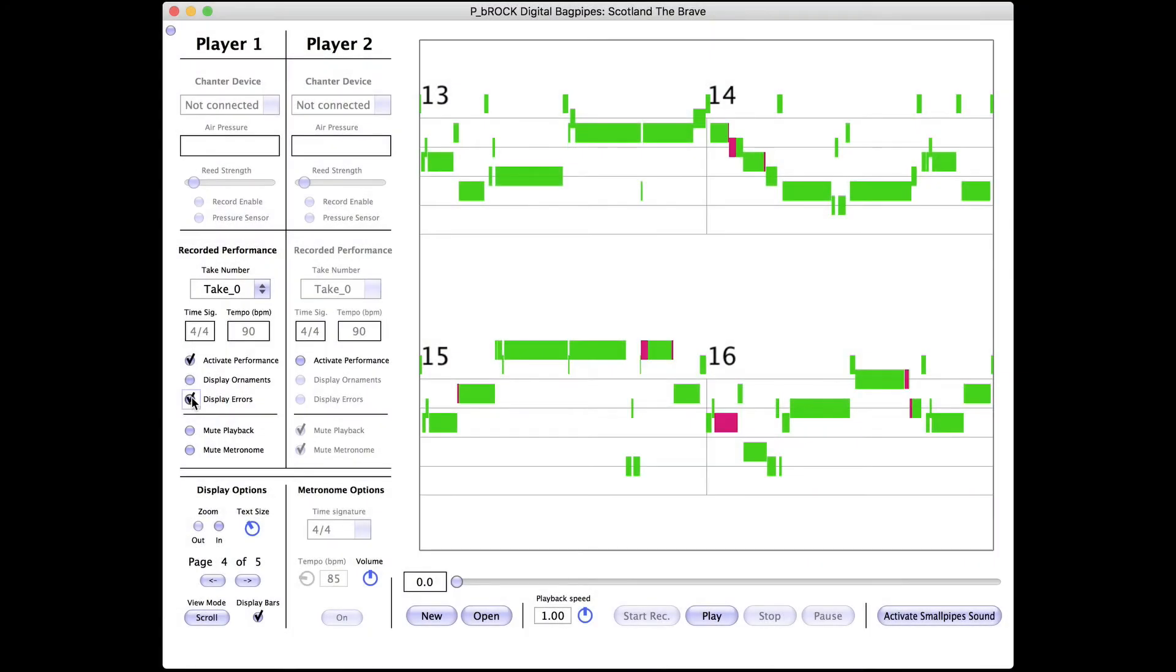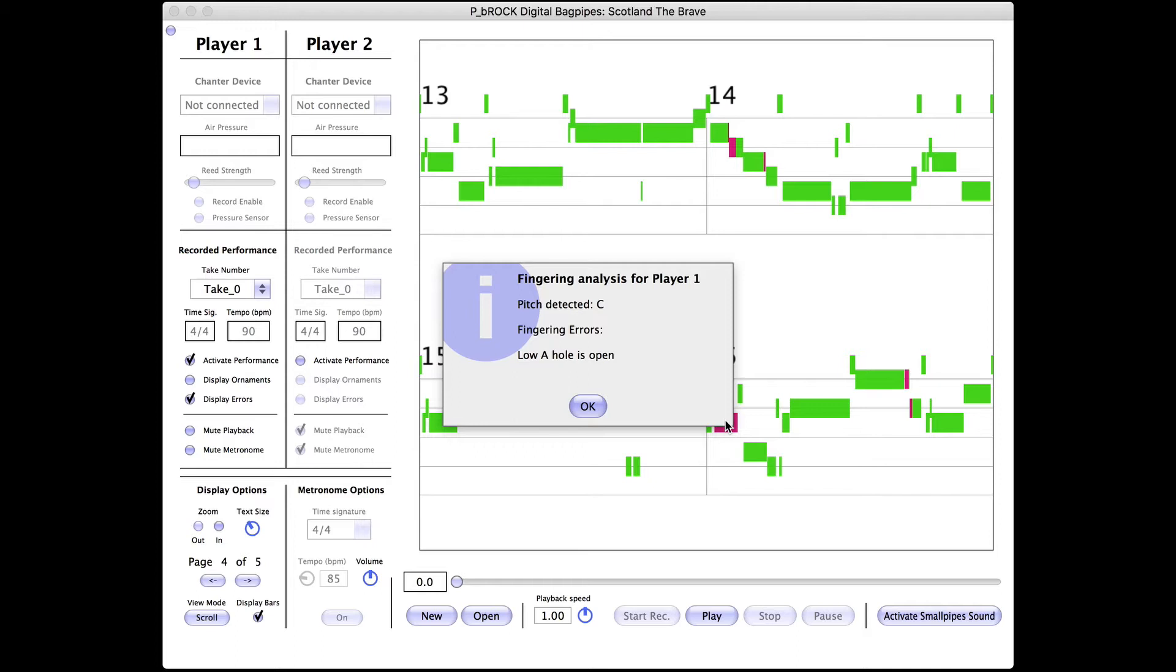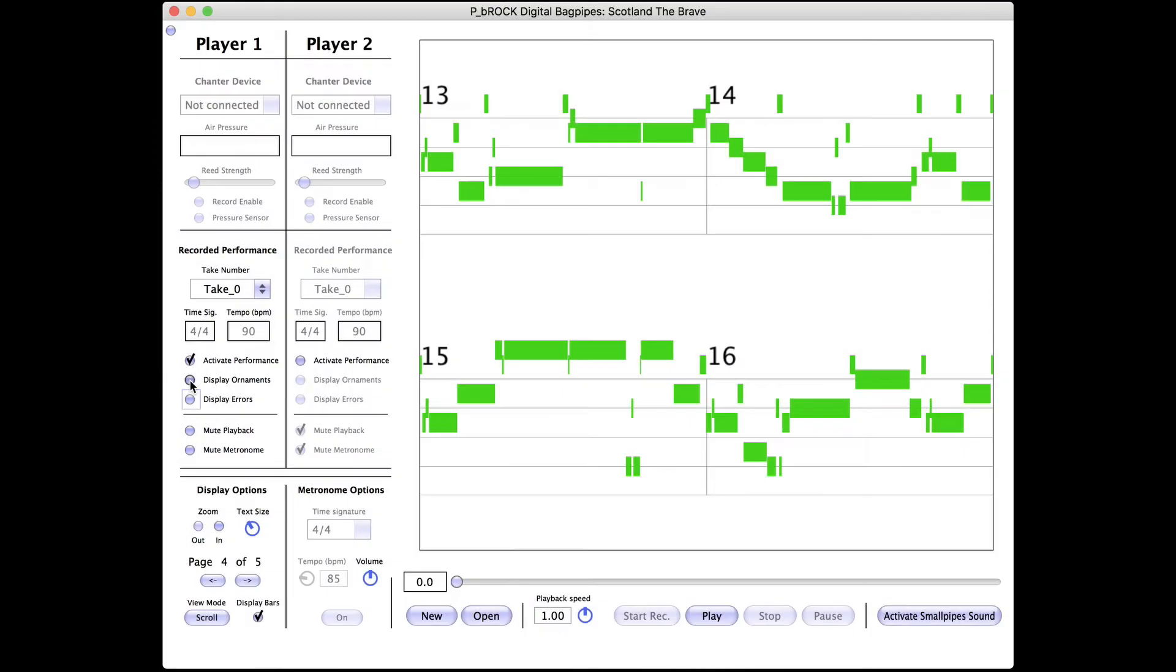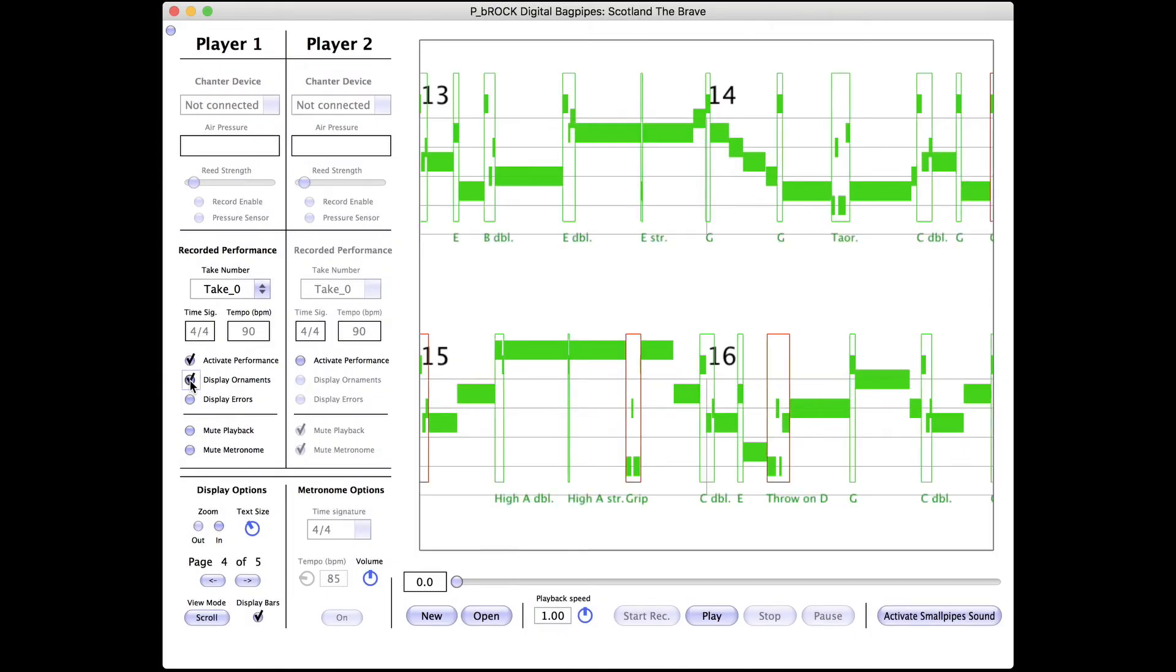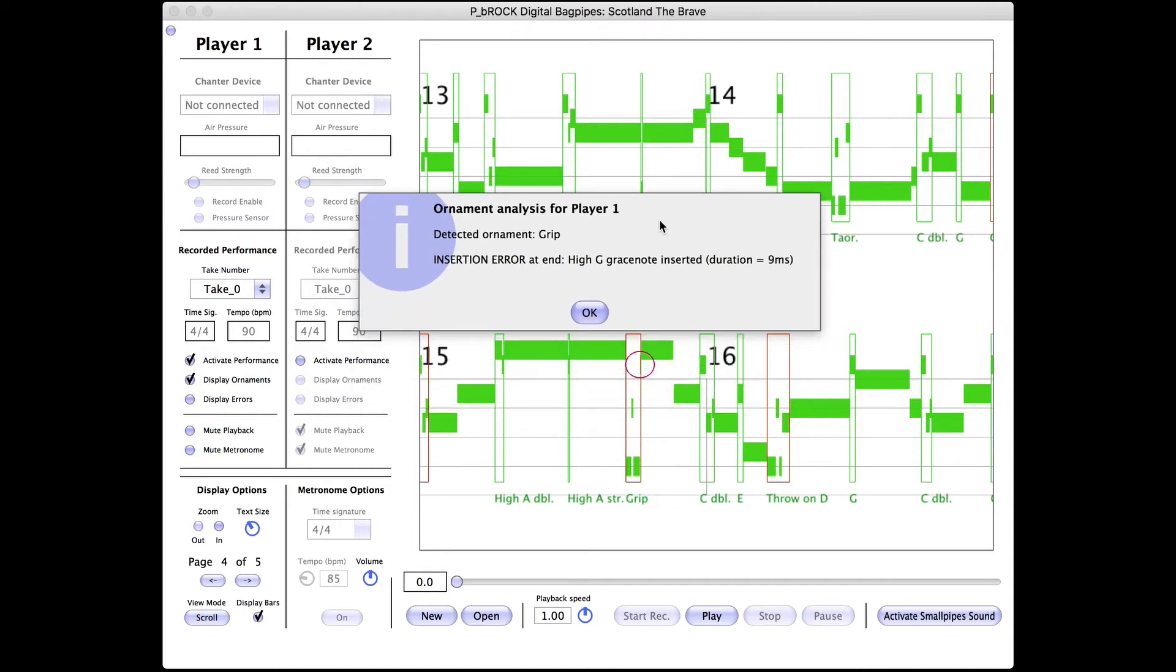The software also incorporates unique piping-specific features, such as identifying false fingering and automatic detection and evaluation of the full range of Highland Piping embellishments, such as burls, doublings, and torluas.